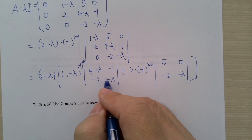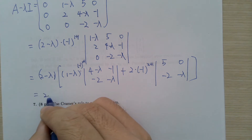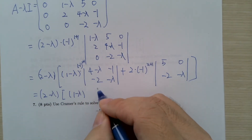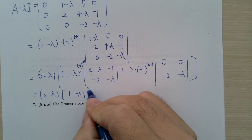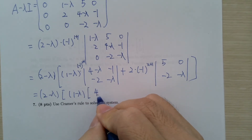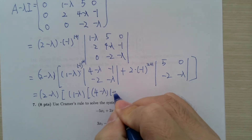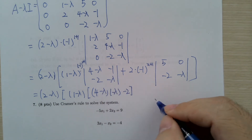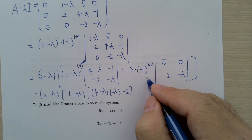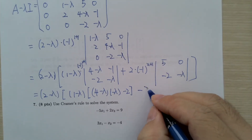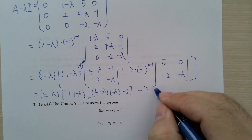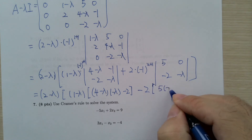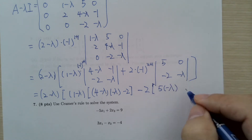The determinant of the 2x2 block gives (2 - λ)(1 - λ) times [(4 - λ)(-λ) - (-2)], and then minus 2 times [5 times (-λ) minus 0].